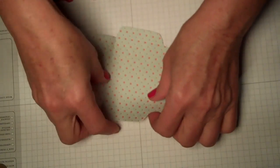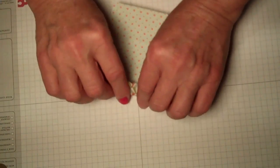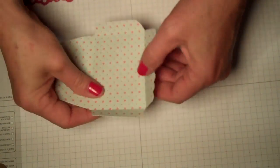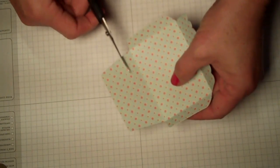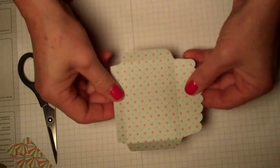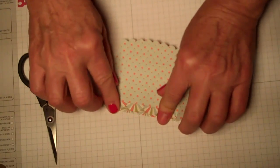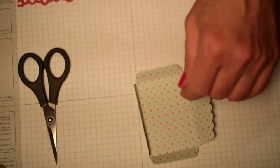All right, now the next step is we're gonna take and fold on the score lines. I should have my bone folder but it's not readily available so I'm not gonna worry about it. And the first thing you want to do is you want to cut off, leaving a half inch, and you're cutting off opposite the scallop side. Okay, leaving a half inch.